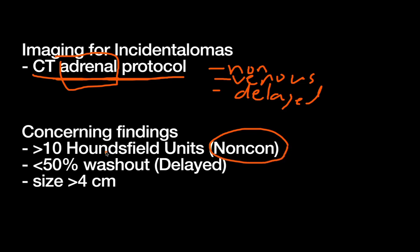On your non-contrast study, you want to know if the adrenal mass is greater than 10 Hounsfield units or less. Greater than 10 is concerning; less than 10 is very reassuring that this is likely a benign lesion. You also want to look at the delayed part of your protocol for washout. If you give contrast and the tumor lights up to a certain degree, the question in the delayed phase is how much contrast washes out. Low washout means something that holds on to contrast — because cancer brings blood vessels to itself and requires a lot of nutrients to grow, something that does not wash out is concerning for cancer.